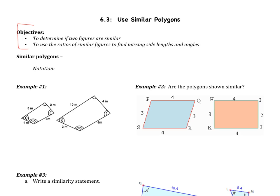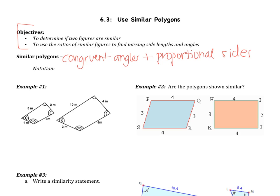Similar polygons have congruent angles and proportional sides. The notation for similar is a tilde. The notation for congruent is an equal sign with a tilde, so that tilde relates to the similar part. Congruent figures are also similar — that's where the tilde comes from.